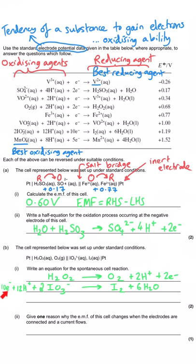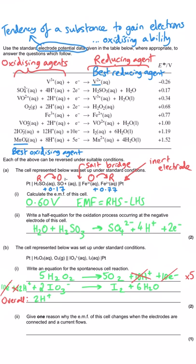With the two half equations balanced, the overall equation is much easier. Ten electrons are being gained in the bottom half equation and only two are being lost in the first, so we multiply the top equation by five so both have 10 electrons — then the electrons cancel. Adding the two half equations together and simplifying: we lose 10 hydrogen ions from both sides, so overall we have 2H⁺, 5H₂O₂, and two iodate ions on the left, producing 5O₂, iodine, and 6H₂O overall.